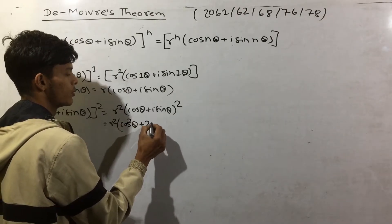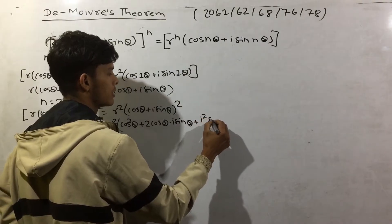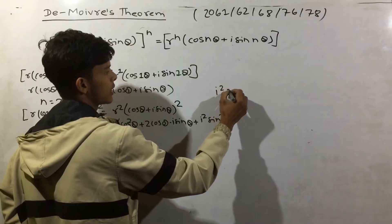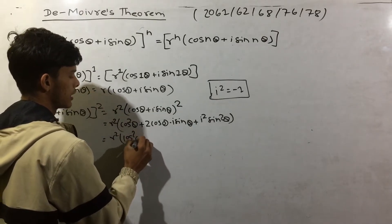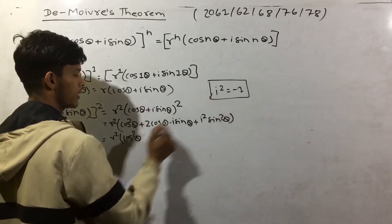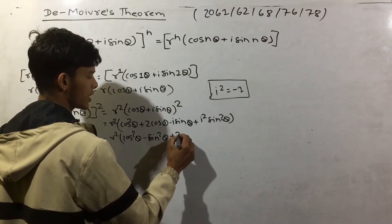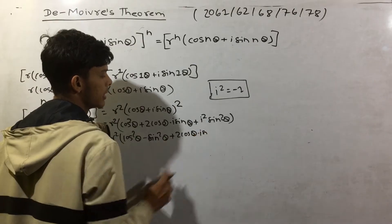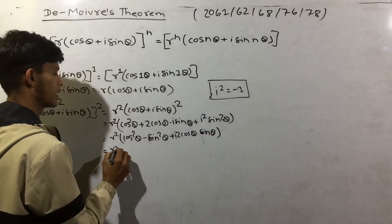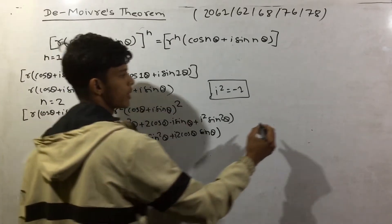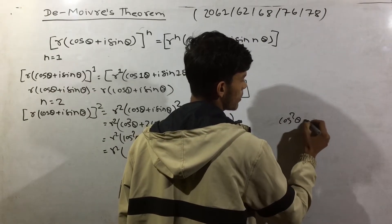Expanding: plus 2 cos theta into i sin theta, plus i squared sin squared theta. Since i squared equals minus 1, we get r squared times cos squared theta minus sin squared theta, plus 2 cos theta into i sin theta.